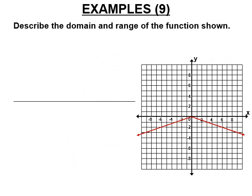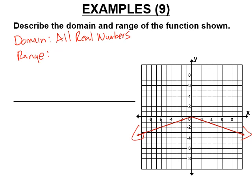Let's find the domain and range of the flipped function. It goes on forever in both directions, so the domain is all real numbers. Both sides point down, so y will be less than or equal to zero — the highest point, the vertex, is at y = 0. The range is y ≤ 0.